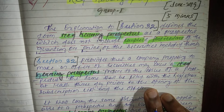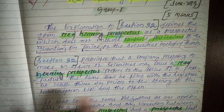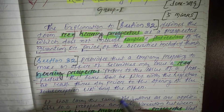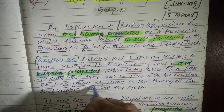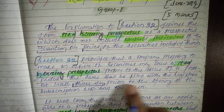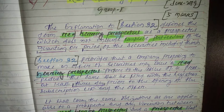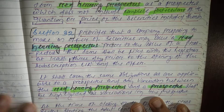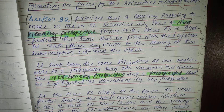Section 32 also defines that a company which is planning to make an offer of securities may issue a Red Herring Prospectus prior to the issue of a prospectus. The same shall be filed with the Registrar at least three days prior to the opening of the subscription list and the offer.